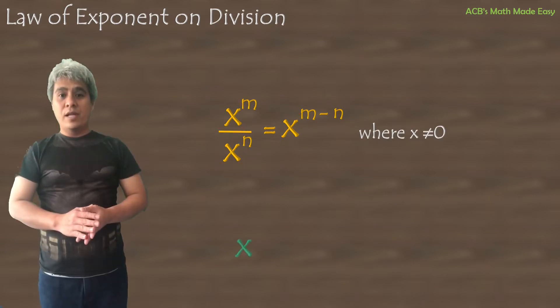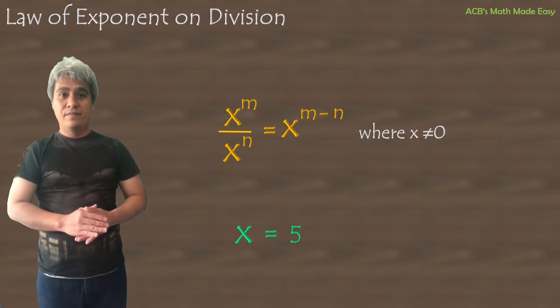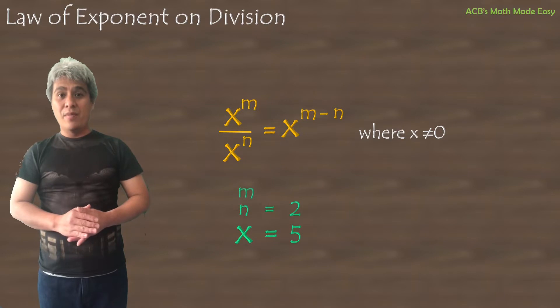We will put some value on them to prove our formula is correct. x will be 5, n will be 2, and the value of m is 4.